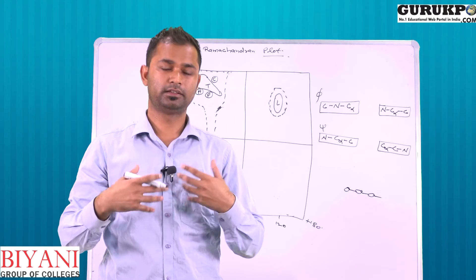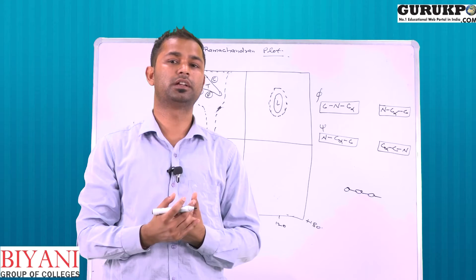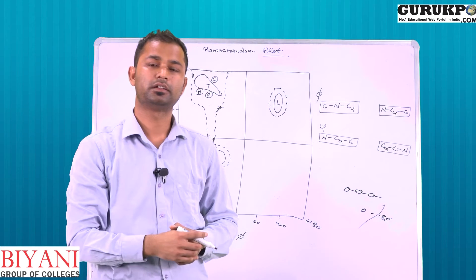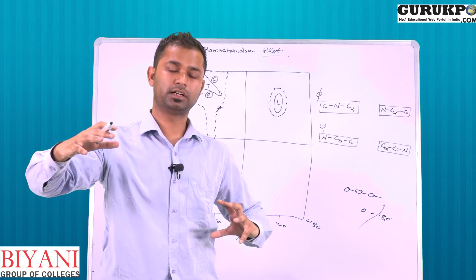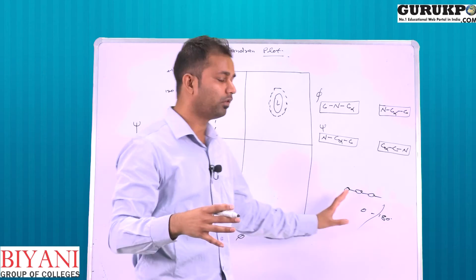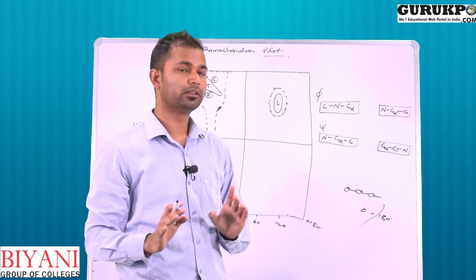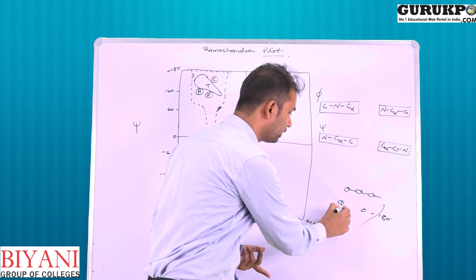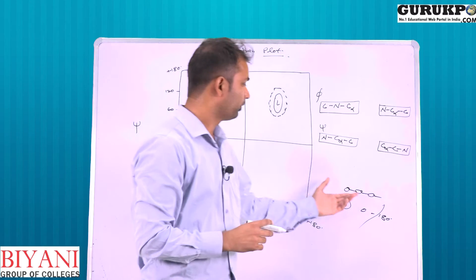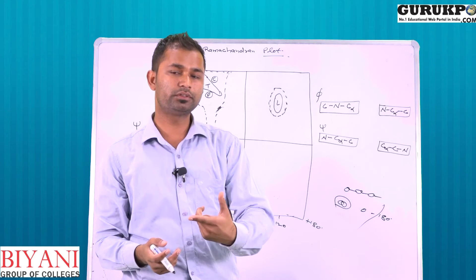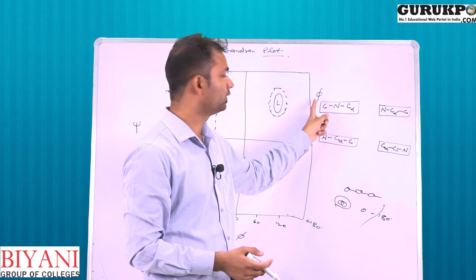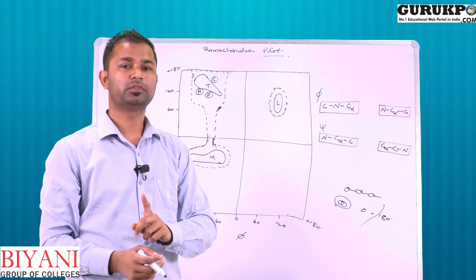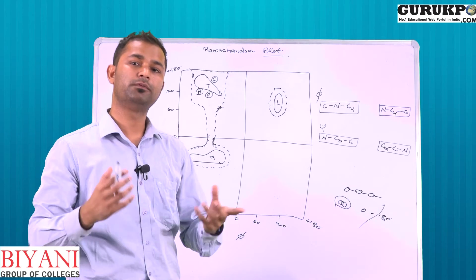The peptide bond rotation is restricted because it has a little bit of pi bond character — a little bit of double bond character. So rotation is restricted to 0 or 180 degrees, meaning atomic arrangements around the peptide bond will be cis or trans. The rotation around the peptide bond is considered the omega angle. Rotation around the N–C-alpha bond is the phi angle, and rotation around the C-alpha–C bond is the psi angle.